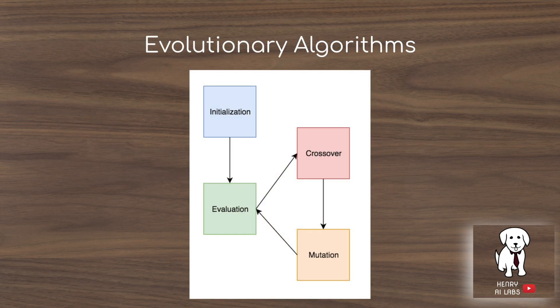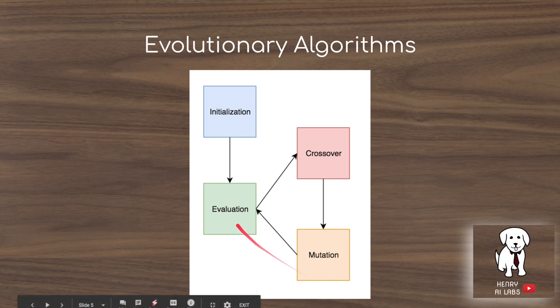Generally, evolutionary algorithms follow this framework: they start with some initialization of the population, then population members are evaluated, there may be some form of crossover (which can be omitted), then they are mutated, and this cycle repeats for a given number of iterations.